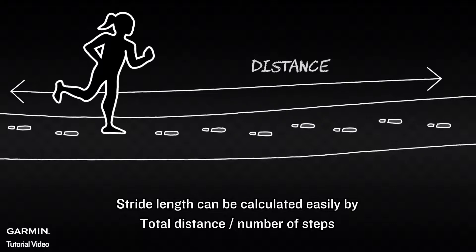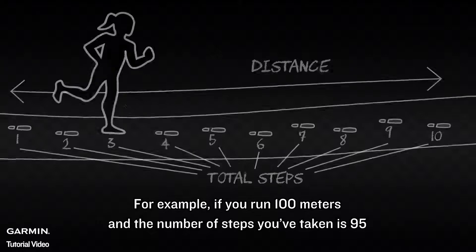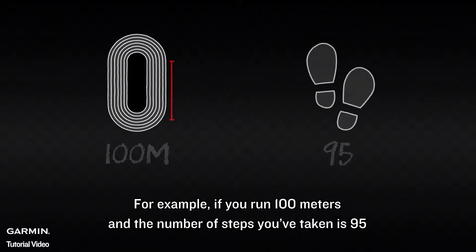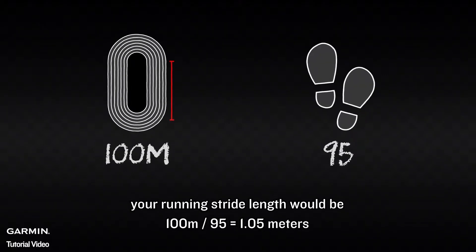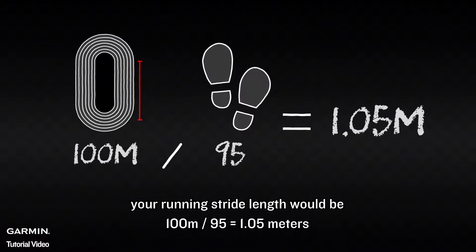Stride length can be calculated easily by total distance divided by number of steps. For example, if you run 100 meters and the number of steps you've taken is 95, your running stride length would be 100 meters divided by 95, which equals 1.05 meters.